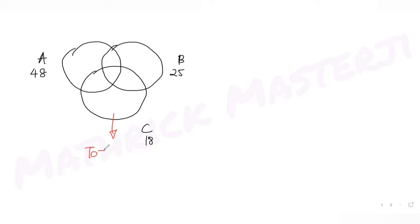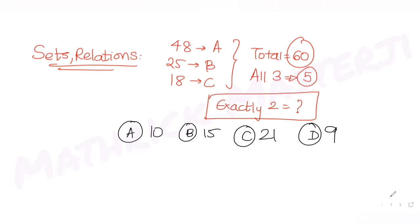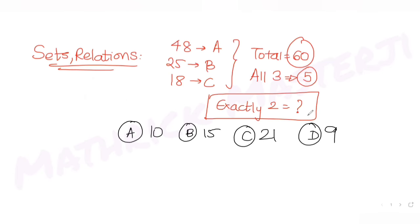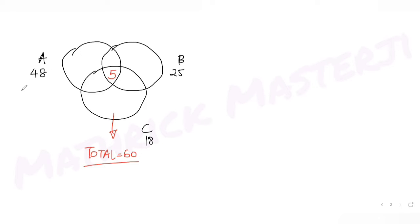We have also been told that there are 60 total medals given to all men. So the addition of all the regions in the entire three circles is 60. The question also tells us that the number of men who received medals in all three events is five — this central region is five. We need to find how many men got medals in exactly two events, which corresponds to the three pairwise-overlap regions.